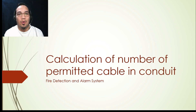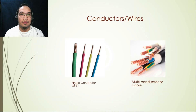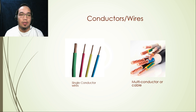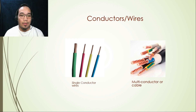Hello guys, welcome back to the All About Fire Protection channel. Today's topic is about the calculation of the number of cables or conductors inside a conduit. There are two types of cables mostly used in construction or installation of fire alarm: a single conductor or a multi-conductor cable. As shown in the illustration, on one side are examples of single conductor wires, and on the right side are examples of multi-conductor cables.